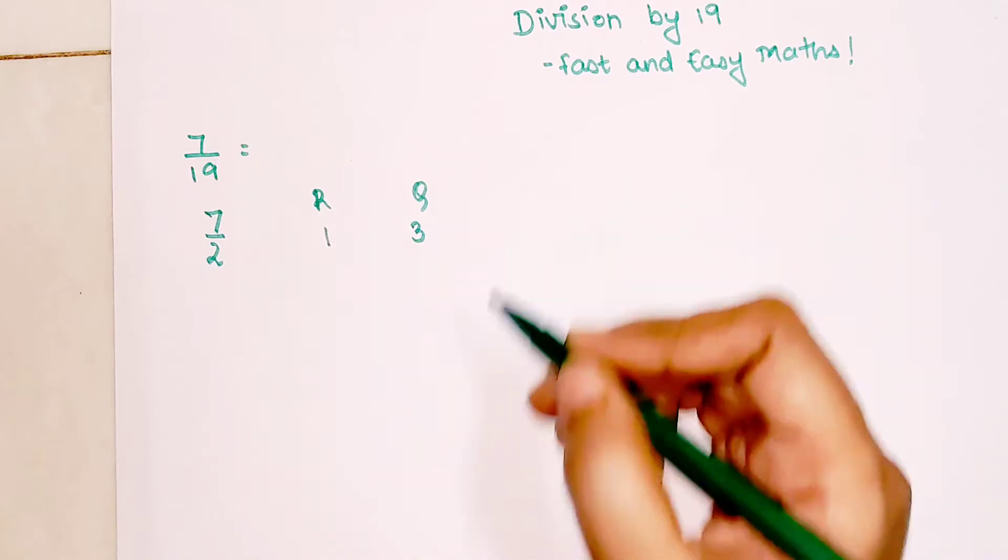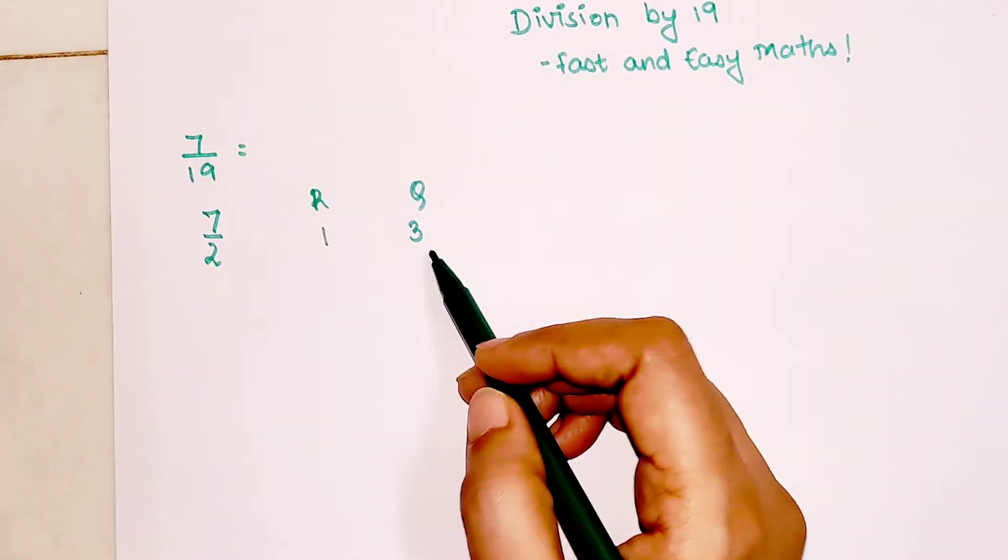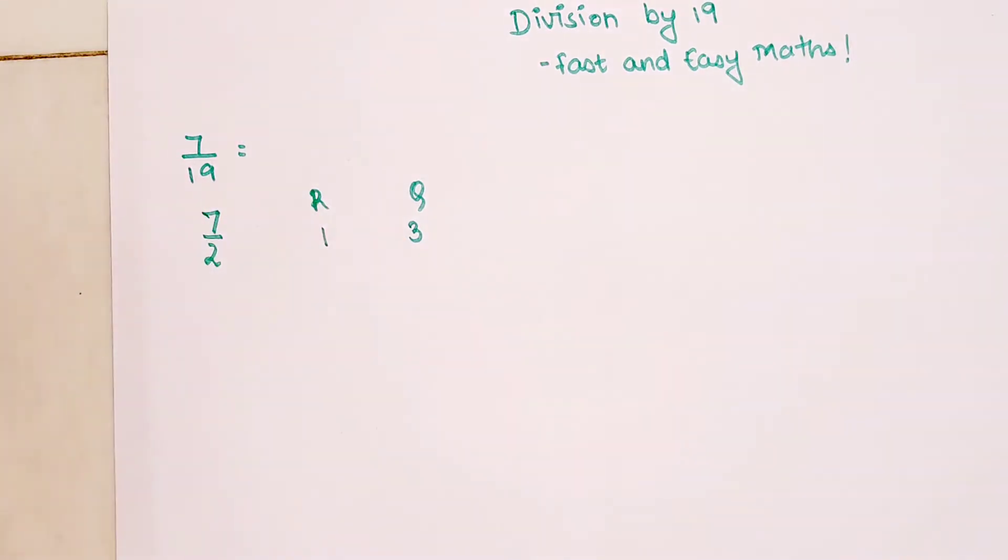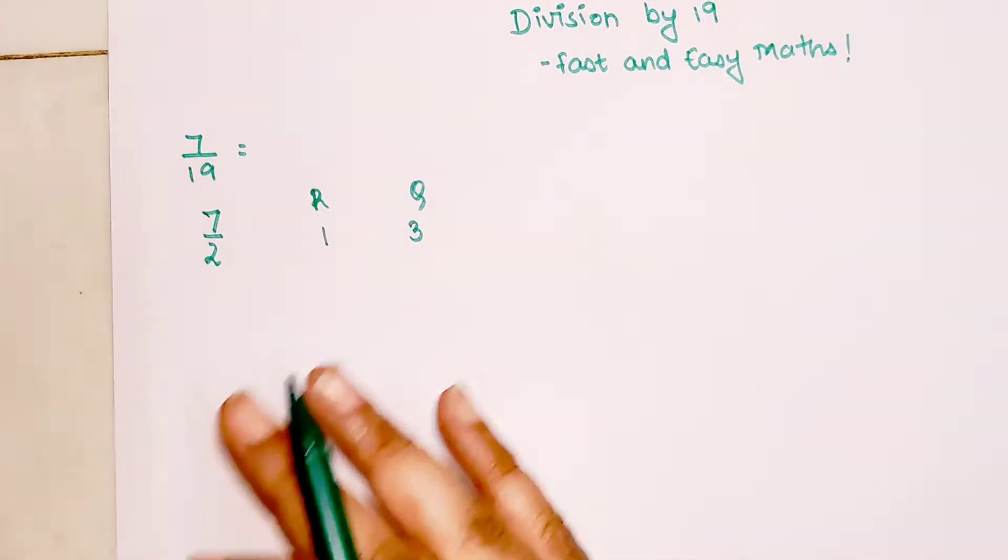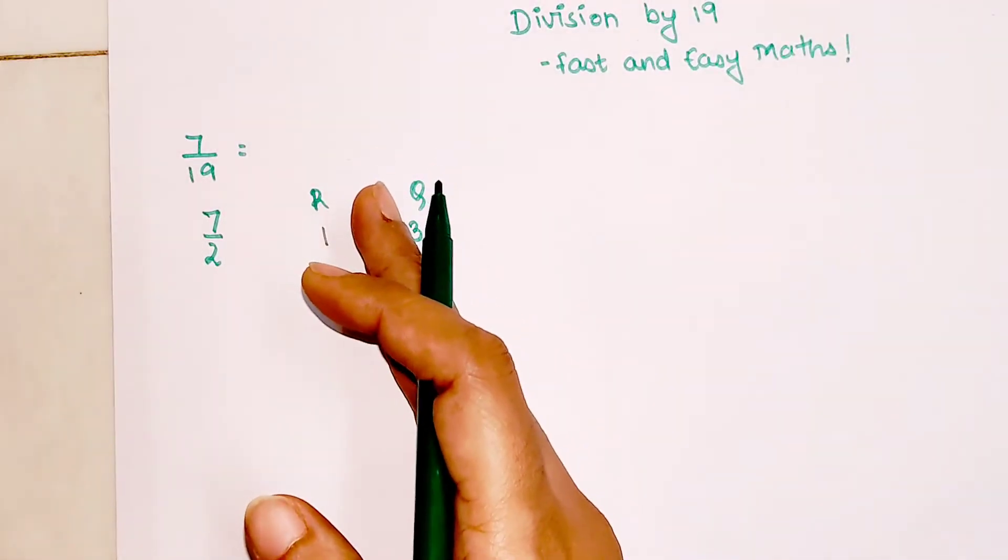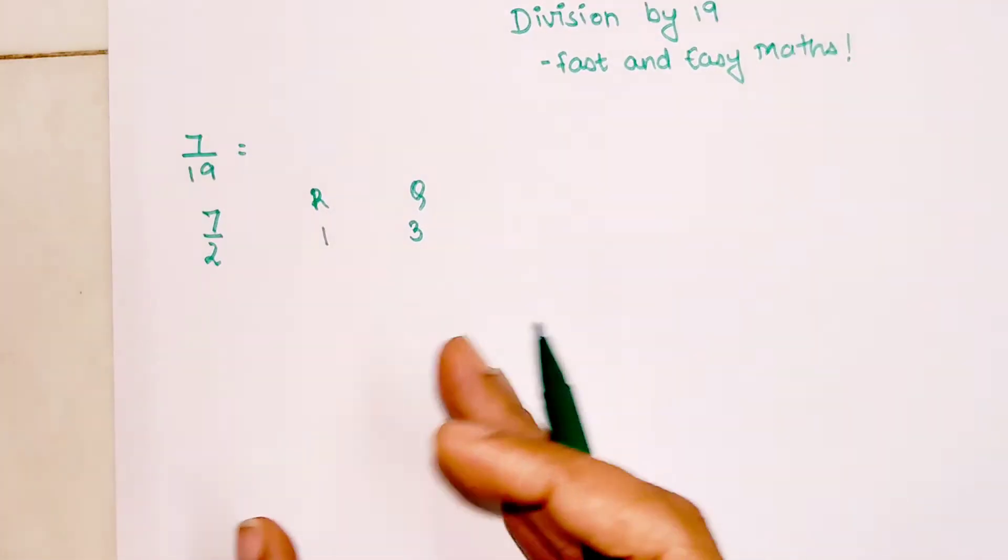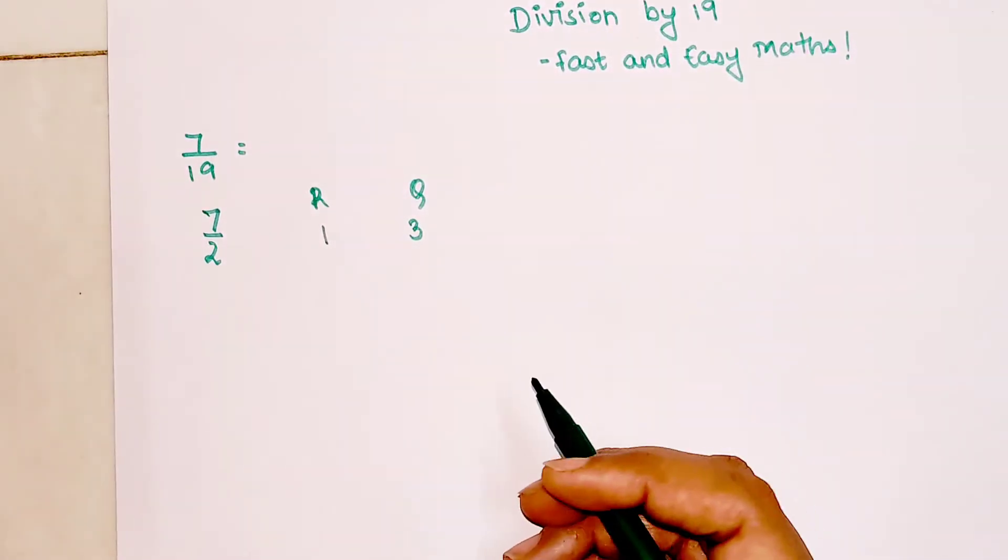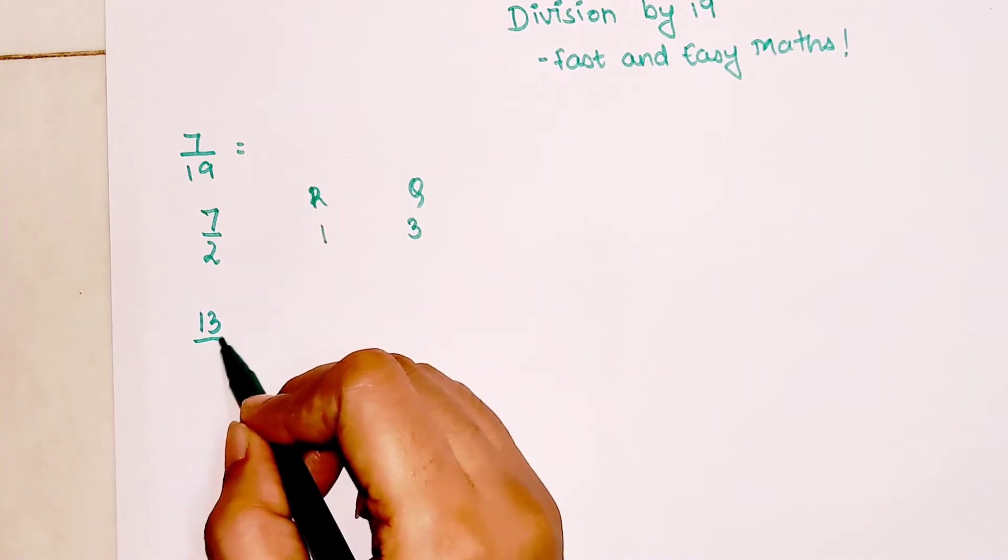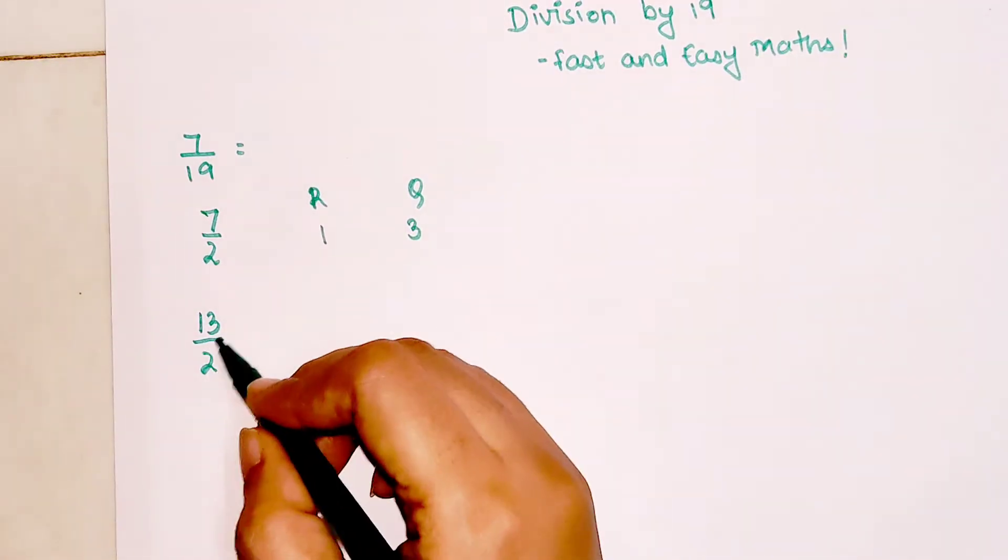Please understand all of these numbers we get are going to be divided by 2. If the number is odd, straight away write the remainder as 1. If the number is even, write the remainder as 0. Now take this number 13 and divide by 2. Again it's odd, so remainder is 1, quotient is 6.